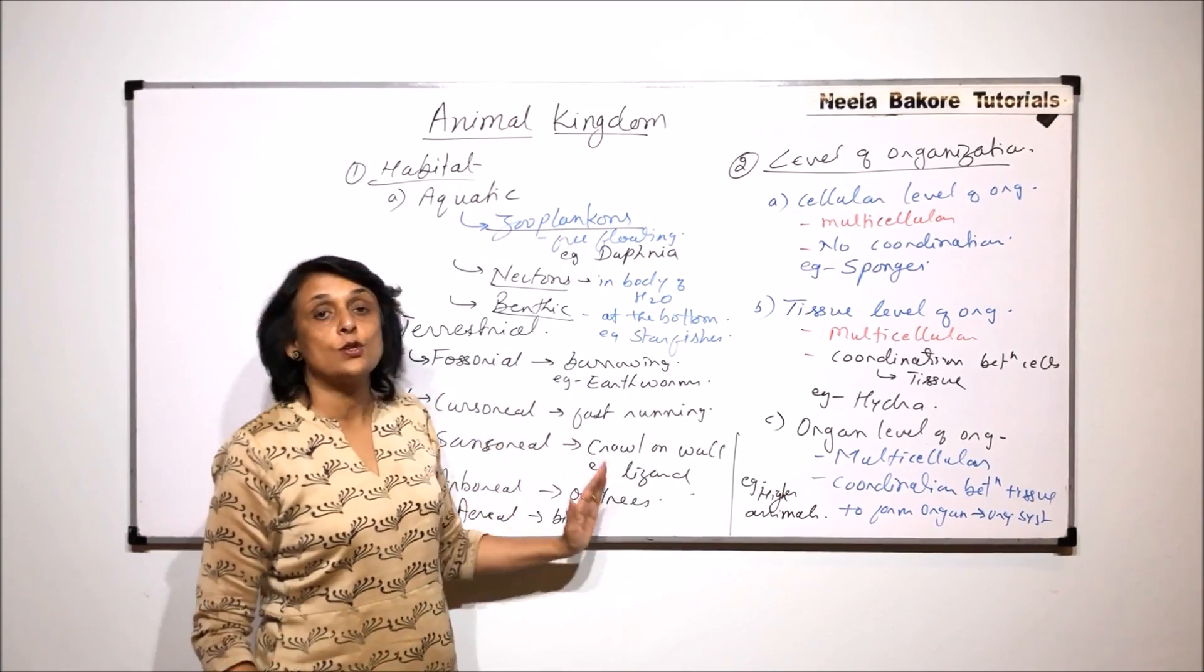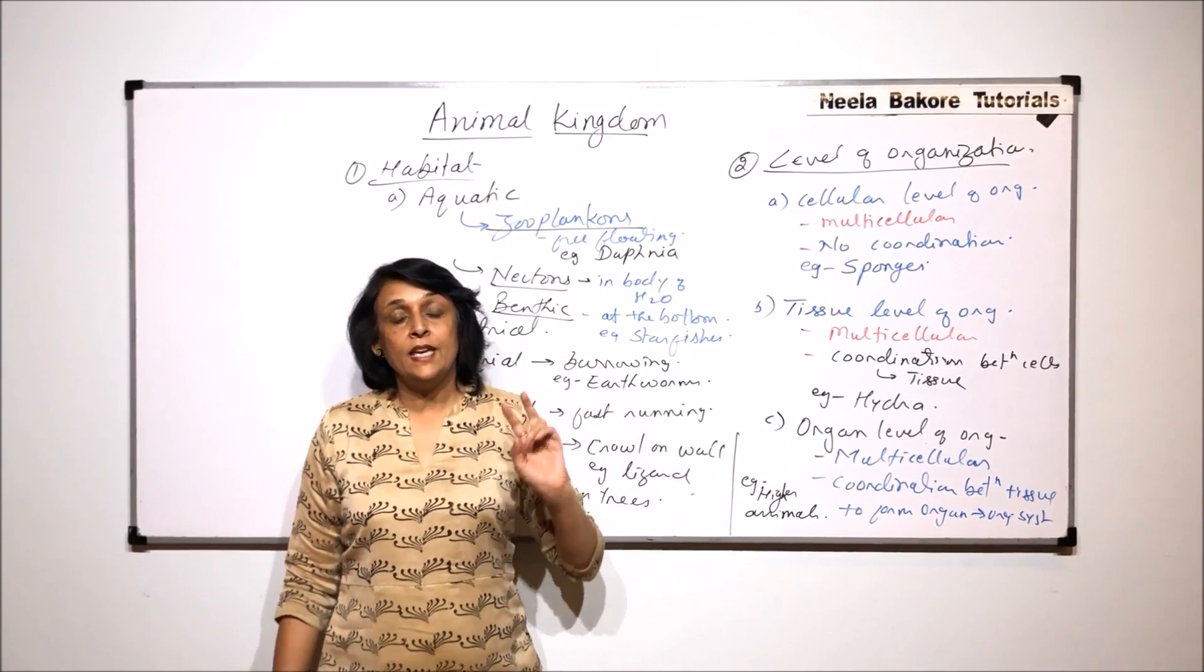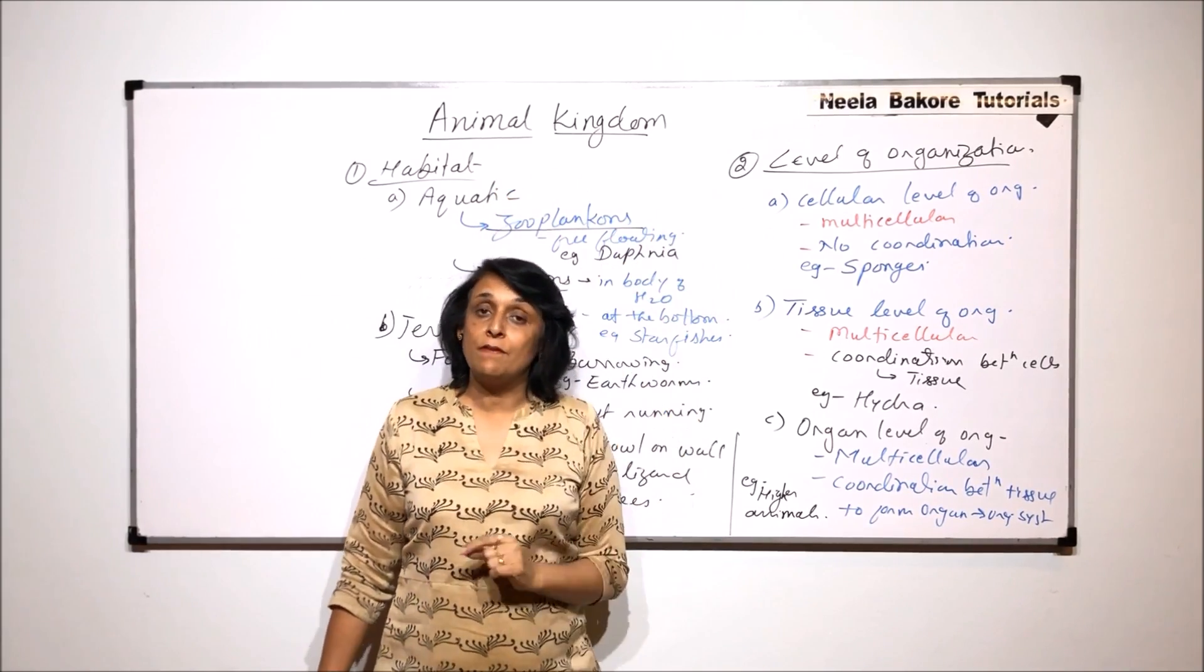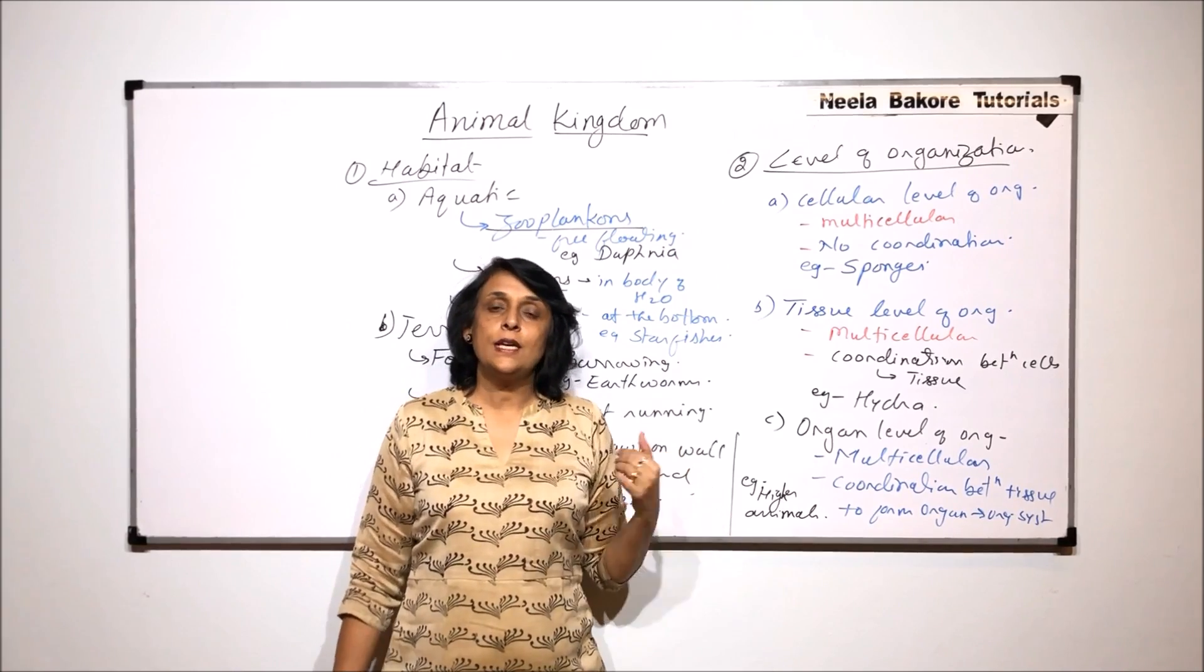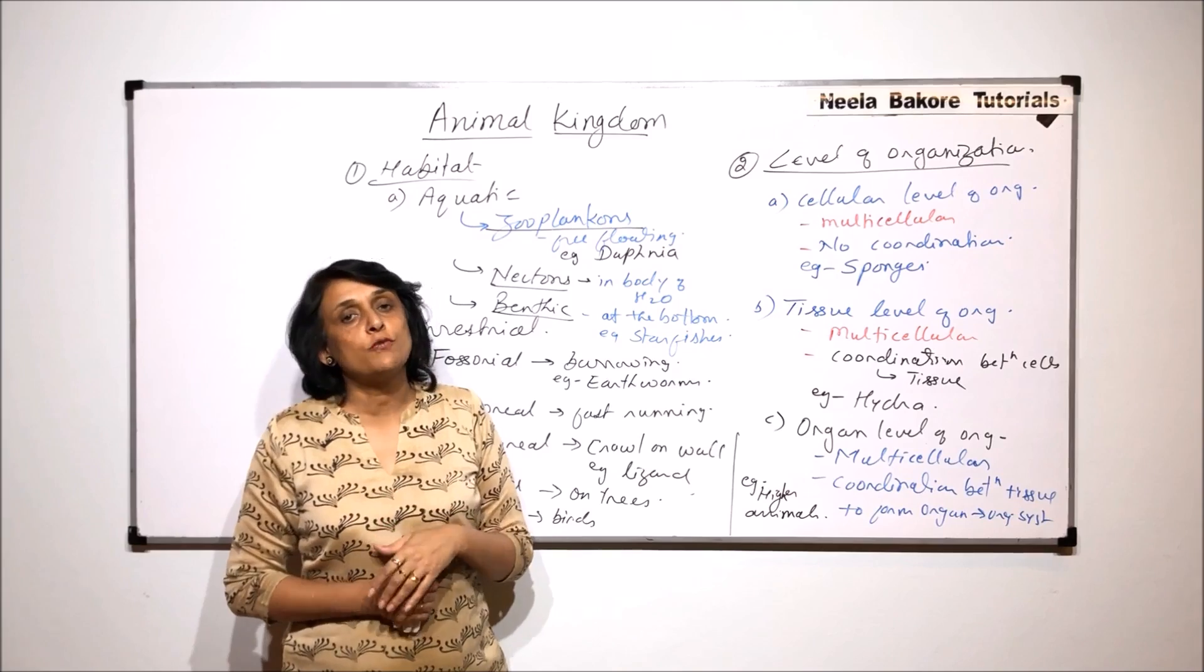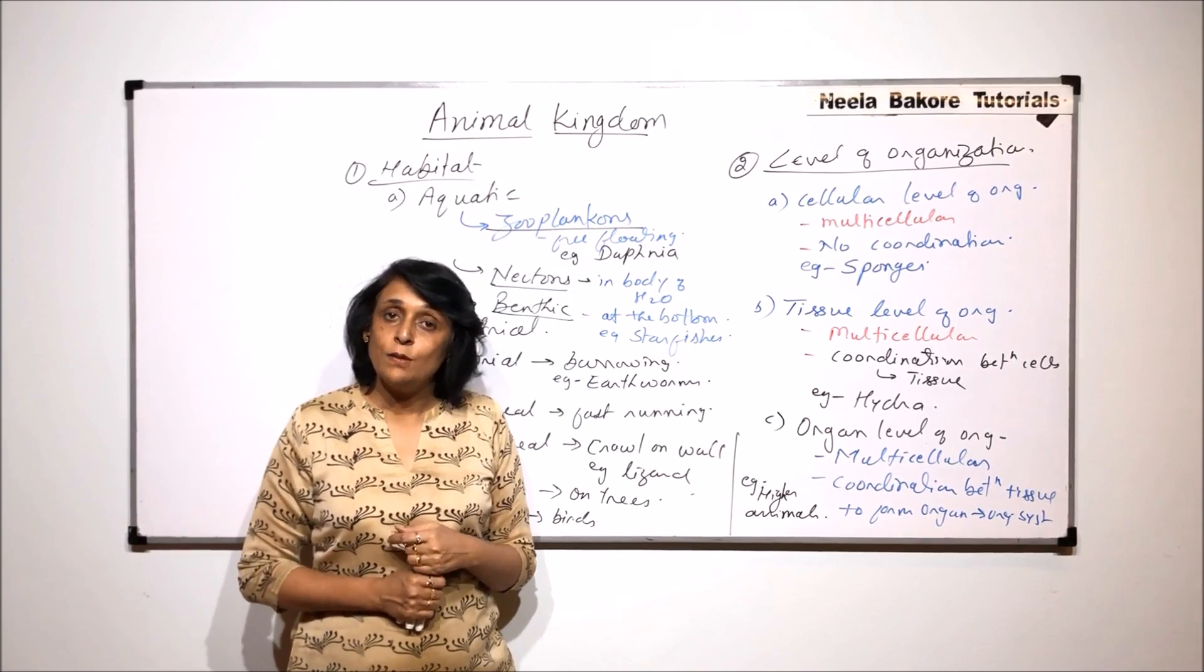So there are three levels of organization which we see in case of animal kingdom. Here we have talked about only two parameters. One is habitat and other is level of organization. Now in the next part we will take couple of more parameters and we will see the various forms or various types of animals that exist.